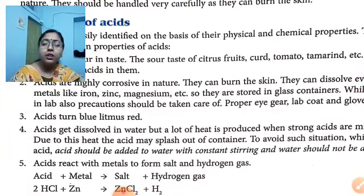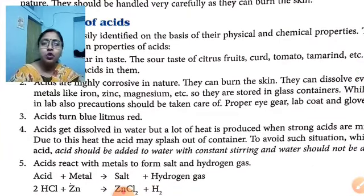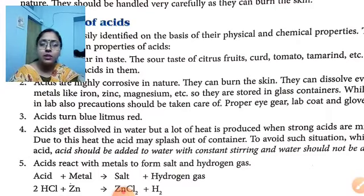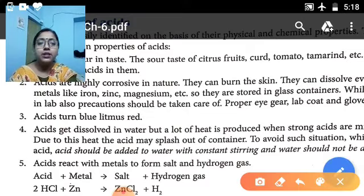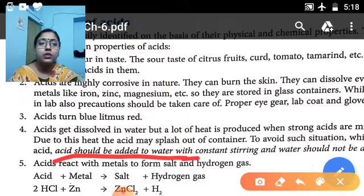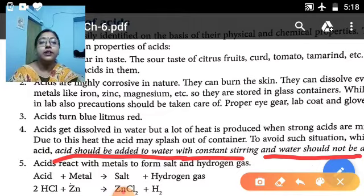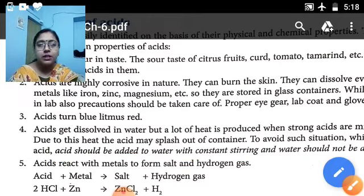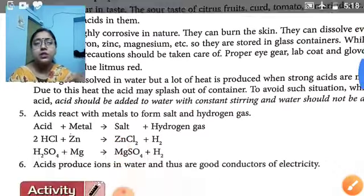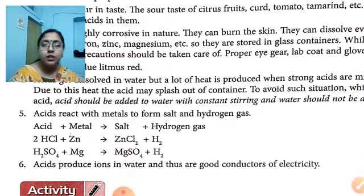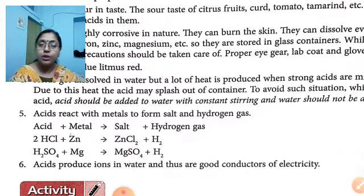We should avoid putting water into acid. Instead, add acid drop by drop into water with constant stirring. Water should not be added to acid. Why? If we put water into acid, so much heat will form that a fire may occur. To avoid such a situation, acid should always be added to water with constant stirring. Dilute acid means more water, less acid; concentrated acid means less water, more acid.